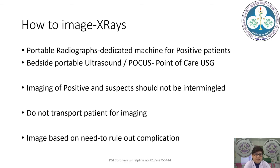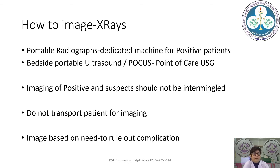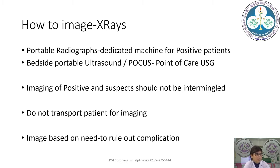How to image: X-rays should be done with portable radiographs, and if possible have a dedicated machine for positive patients. For ultrasound, do bedside point-of-care ultrasound (POCUS) for looking at the lungs and monitoring ARDS progression. Imaging of positive and suspect patients should not be intermingled since it is impossible to clean the machine properly. We should not transport the patient for imaging to the main department or another centre, as this increases the chance of transmission. Imaging should be based on need to rule out complications.